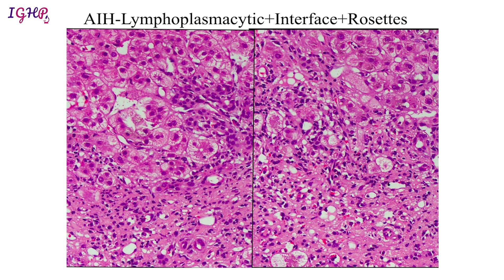In addition to lymphoplasmacytic infiltrate and interface activity, there are also hepatocellular rosettes, defined as rounding of three to four hepatocytes forming a flower-like structure generally without any lumen. If a lumen is seen, these are cholestatic rosettes, which are not typically found in autoimmune hepatitis and will have bile in the center. Another feature of autoimmune hepatitis is emperipolesis, wherein the hepatocytes engulf lymphocytes and plasma cells, also usually seen at the interface.